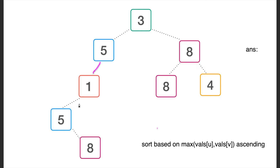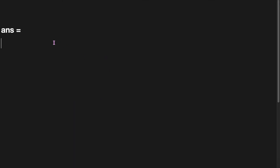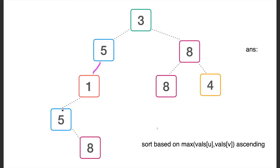For the next edge (also with max value 5), we consider the two connected components before adding it. The maximum is 5, and the frequency of 5 in the first component is 1, and in the second component is also 1. This means we can form a good path from this 5 to that 5. We update our answer by adding 1×1 = 1, then add the edge.